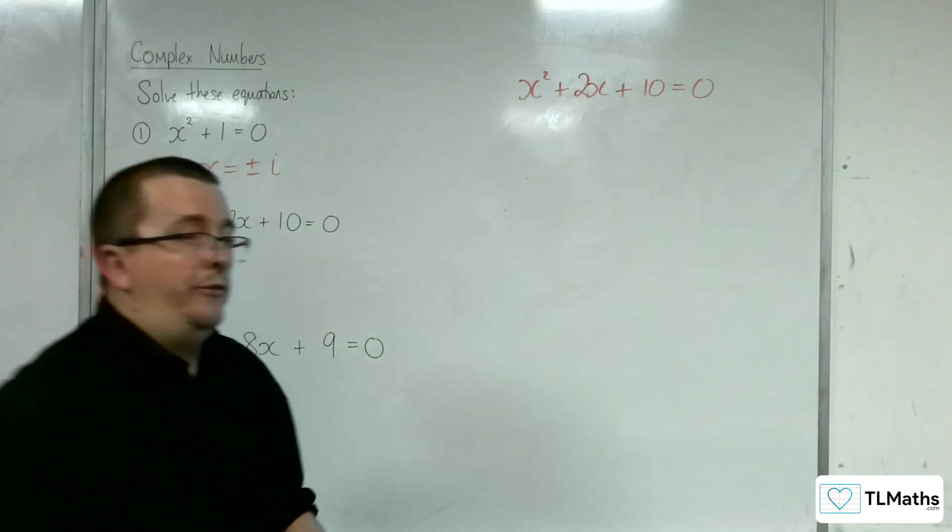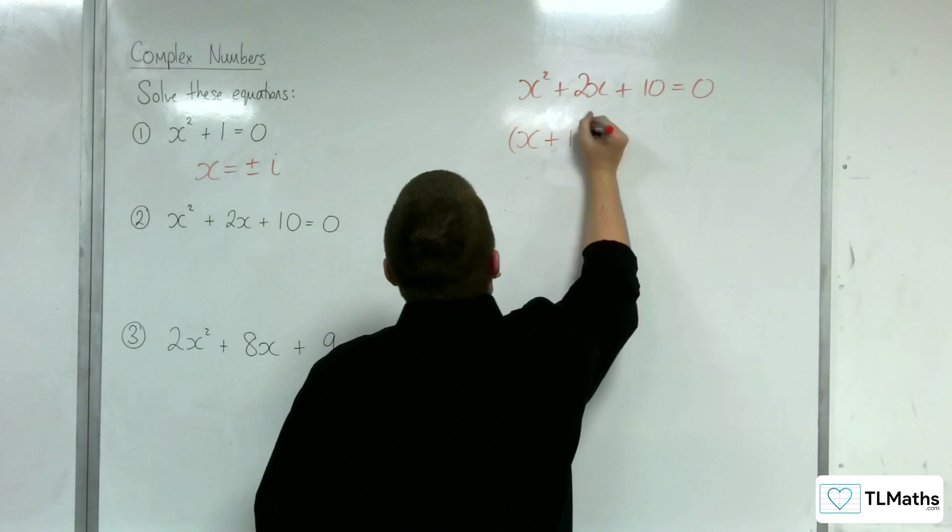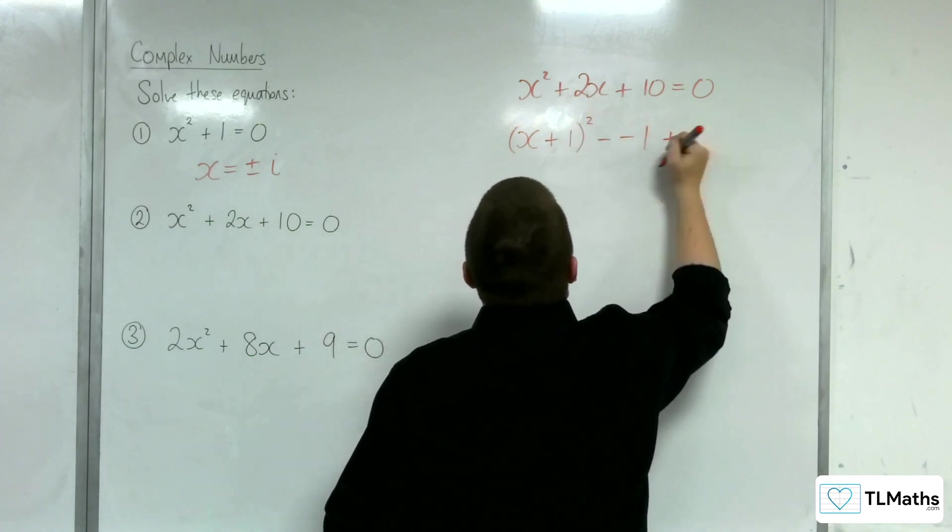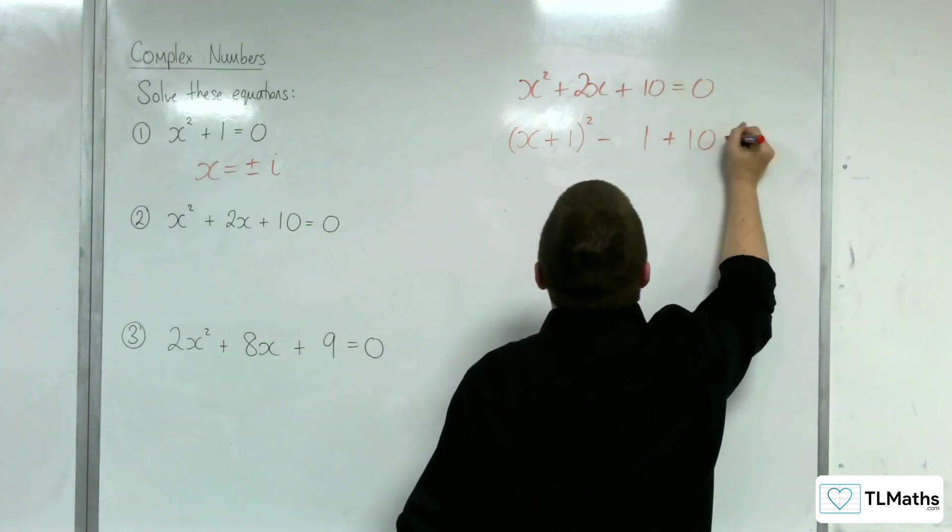So, I'm going to go straight to complete the square root of solving. So, x plus 1 squared, take away the square of that number, so take away 1. Take away 1. I already have this minus sign there. Plus the 10. It's coming in now.